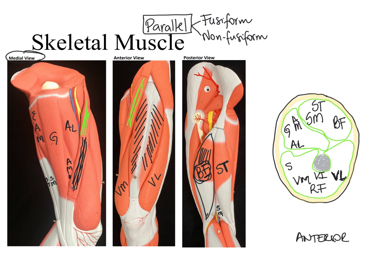The biceps brachii muscle is also a parallel fusiform muscle because fascicles run parallel to one another and it has a fusiform shape. Looking back at the rectus femoris muscle, all the muscle fascicles connect at an angle to a central tendon running through the length of the muscle. When we have a tendon running through the length of a muscle with fascicles attaching to it at an angle, that is called pennate. Since the rectus femoris has fascicles on both sides of this central tendon, we specifically call it a bipennate muscle.